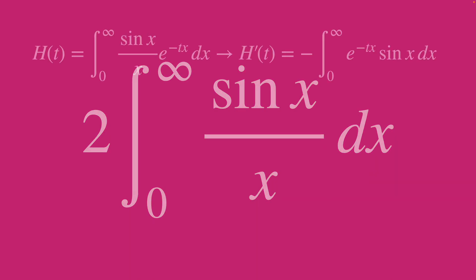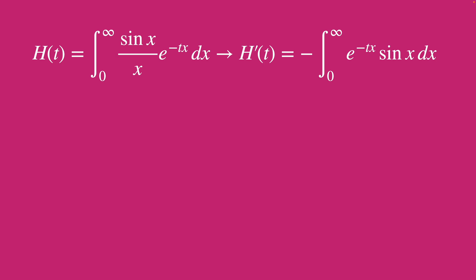And so now, we just let h of t be this integral here, where our e to the negative tx ensures convergence for t greater than or equal to 0. And now, when we take the derivative of our function with respect to t, like we do on this right-hand side, it lets us get rid of this 1 over x, which is really our Feynman magic.